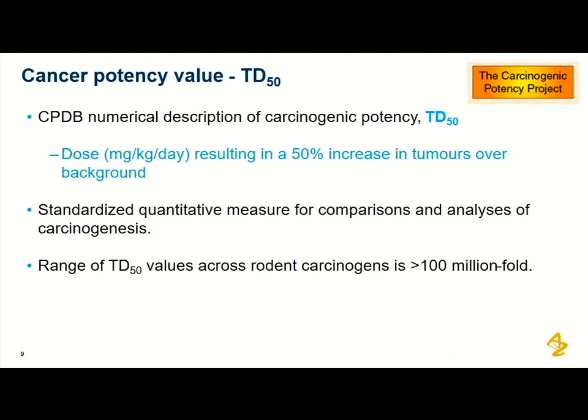Looking at cancer potency values — the TD50. The carcinogenicity potency database derives a numerical description of carcinogenic potency termed the TD50: the dose resulting in a 50% increase in tumours over background level. It's a standardised measure allowing comparison across carcinogenicity studies. There's a huge range of TD50 values across rodent carcinogens in the database — more than a million-fold difference in potency — making it a critical value in deriving compound-specific limits.